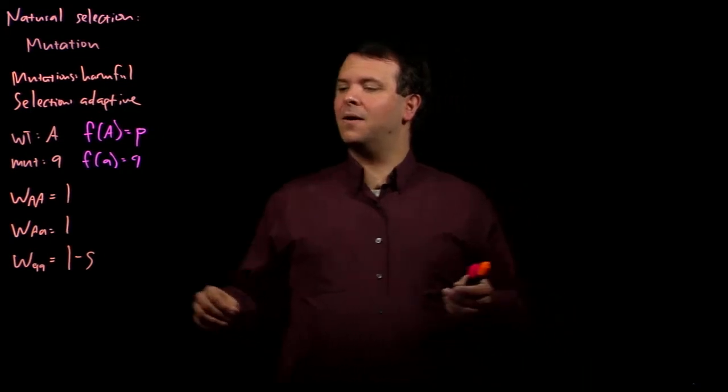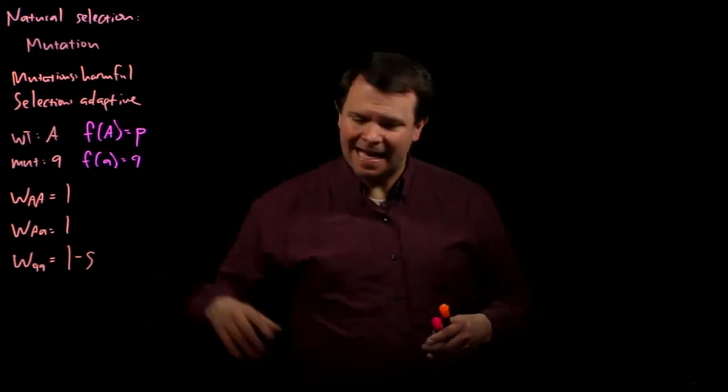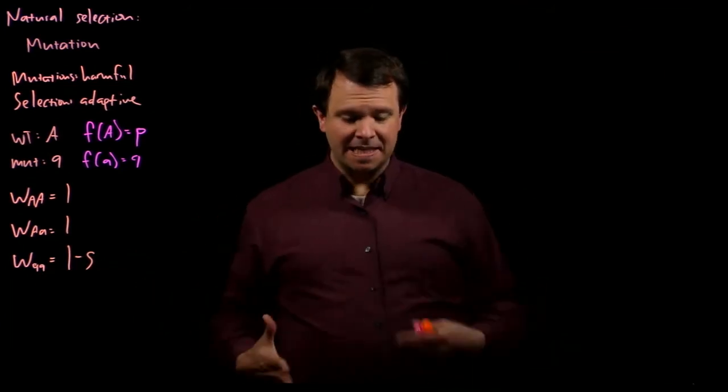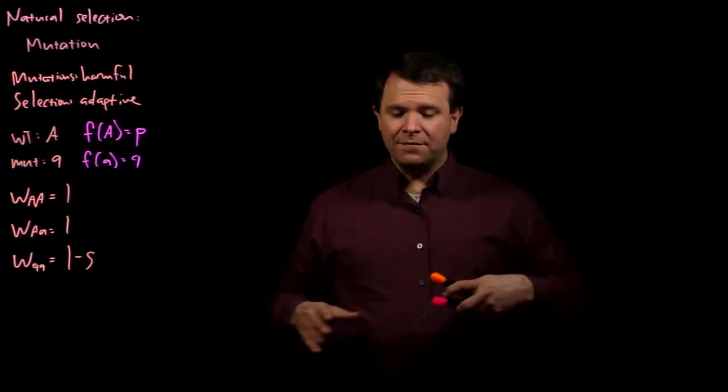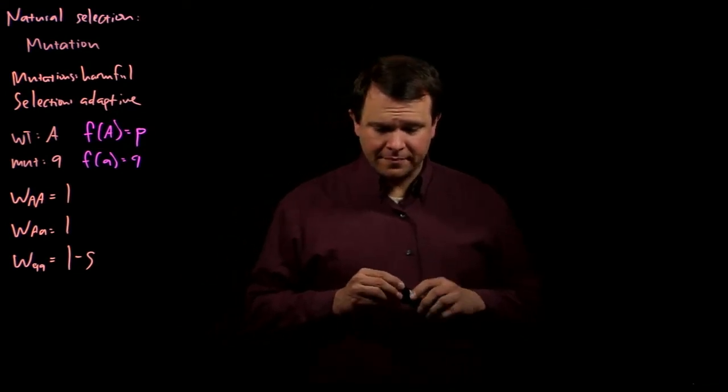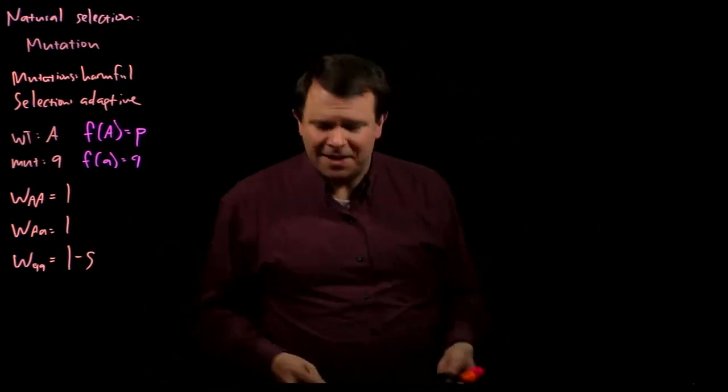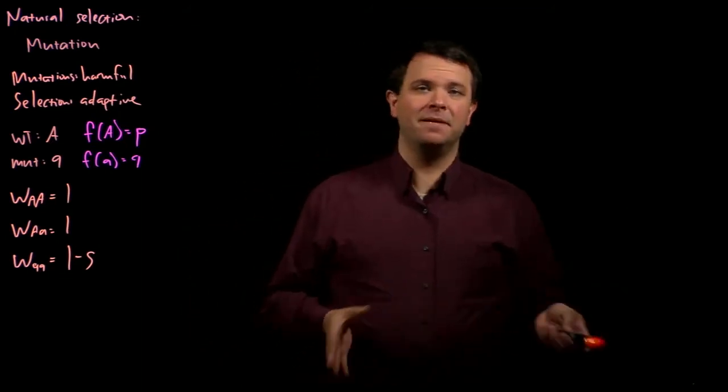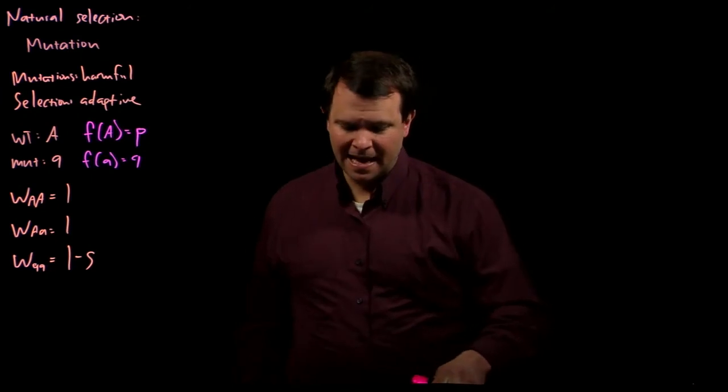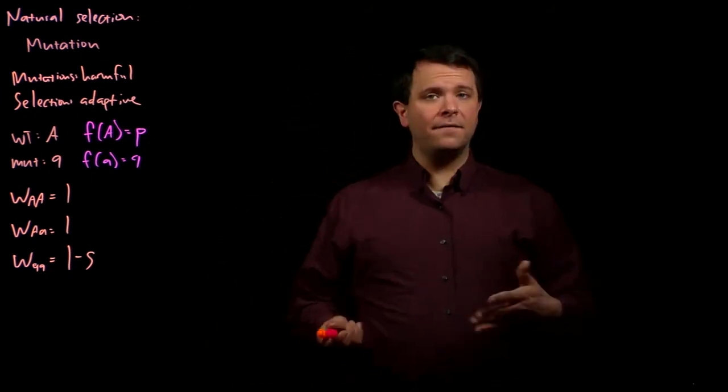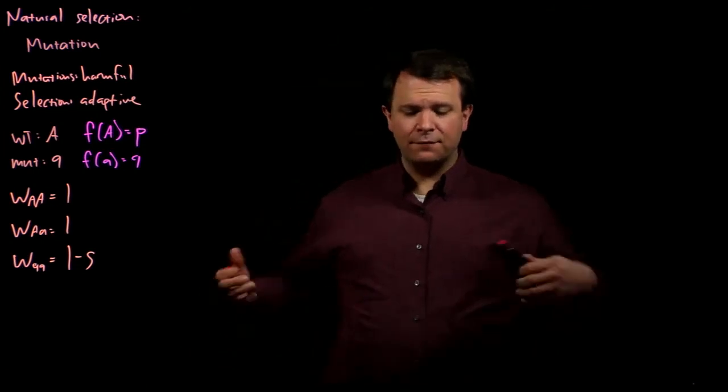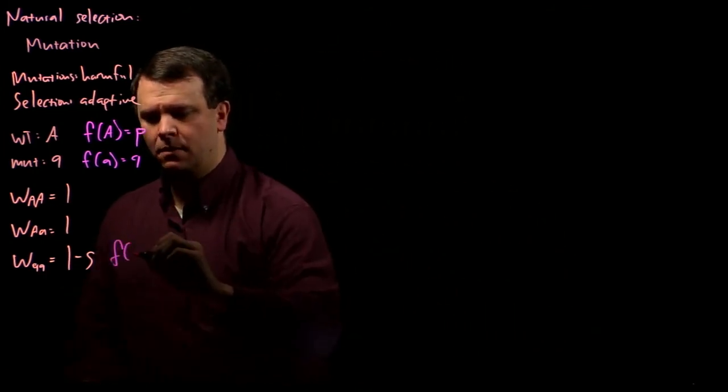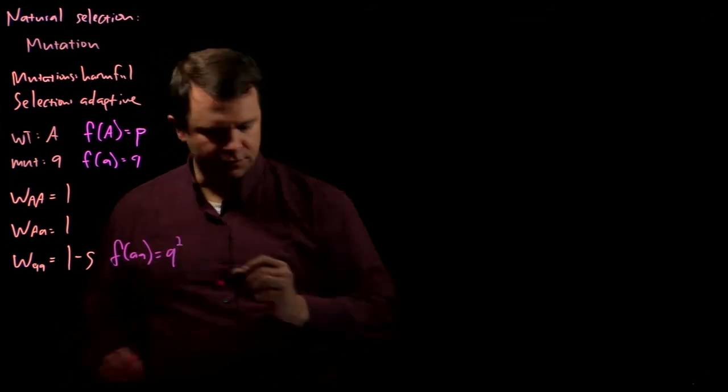Remember that when we're talking about fitness, S is the degree to which this particular genotype is disfavored. If little a is embryonic lethal, then S will be one, but generally speaking, S is between zero and one. Because of Hardy-Weinberg, the frequency that we will see this genotype is Q-squared.